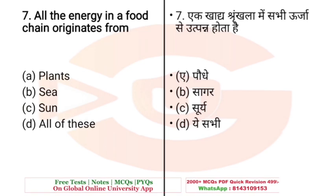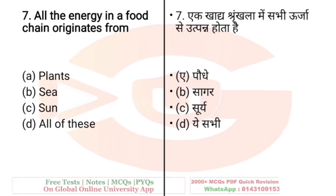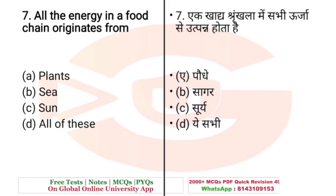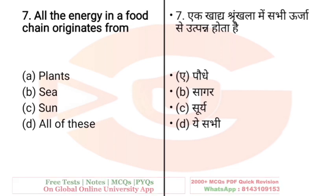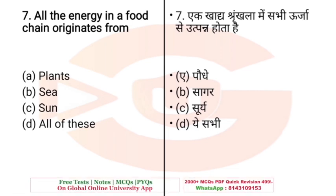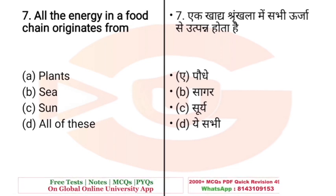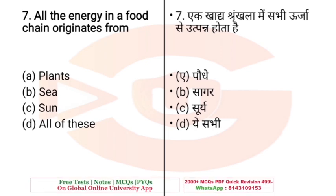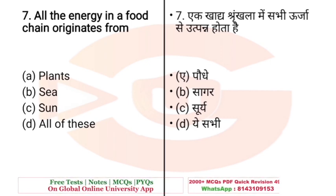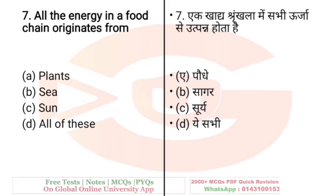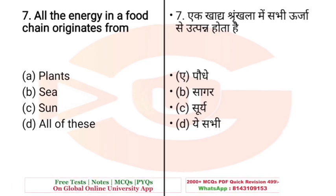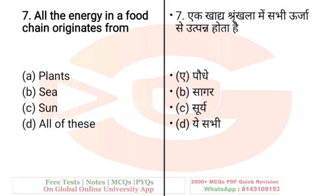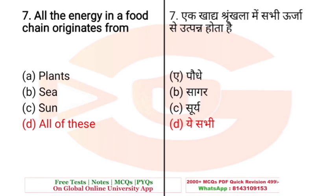Question: All the energy in a food chain originates from — which source does the energy in food originate from? Options: A. Plants, B. (option B), C. Sun, D. All of these. The right answer is D — All of these.